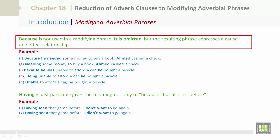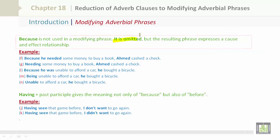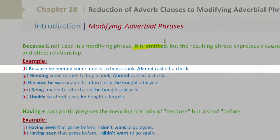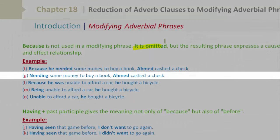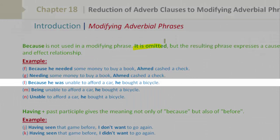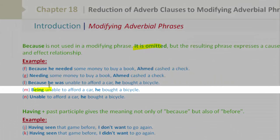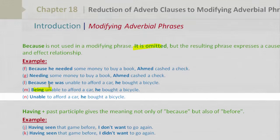'Because' is not used in a modifying phrase — it is omitted — but the resulting phrase still expresses a cause-and-effect relationship. For example: 'Because he needed some money to buy a book, Ahmed cashed a check' becomes 'Needing some money to buy a book, Ahmed cashed a check.' Similarly, 'Because he was unable to afford a car, he bought a bicycle' becomes 'Being unable to afford a car, he bought a bicycle,' or simply 'Unable to afford a car, he bought a bicycle.'